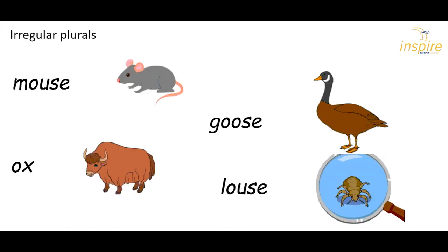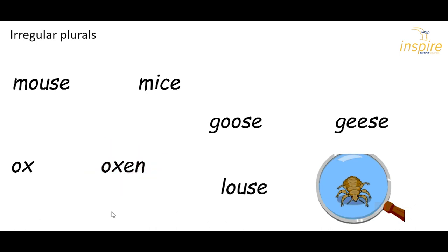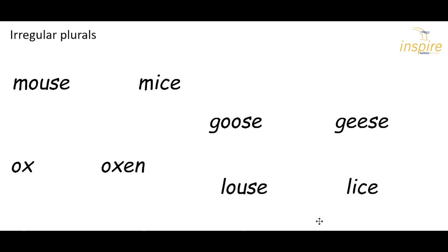Then we have irregular plurals, where you don't add S, or ES, or F to VES. This time the whole word changes. Again, these are ones you need to remember. One mouse becomes lots of mice. One goose becomes lots of geese. This is a tricky one — one ox becomes lots of oxen. One louse becomes lice, a little like mouse and mice — that would be an easy way for you to remember that one.